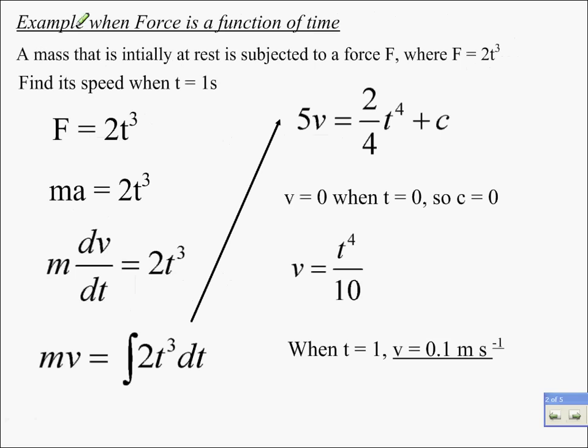Let's look at an example for this. When force is a function of time, you've got a mass initially at rest, subjected to a force where F is 2t cubed. Find its speed when t equals 1. So, F is 2t cubed, F equals ma, so ma is 2t cubed, m dv by dt, because a is not constant, it's a function of time, is 2t cubed. Rearrange that,